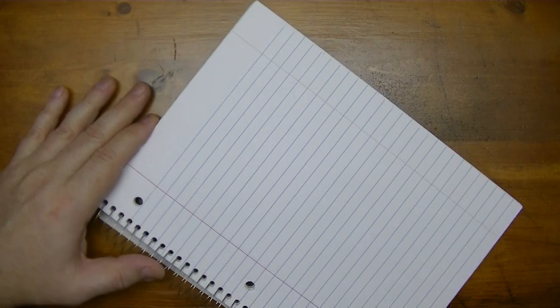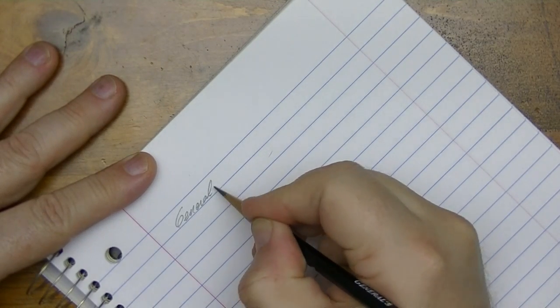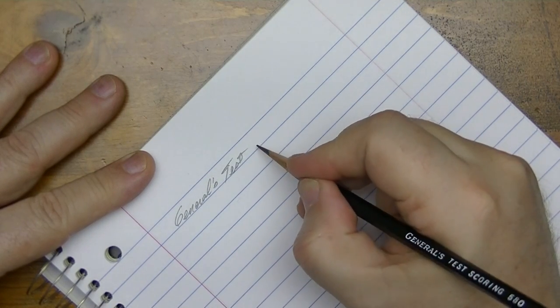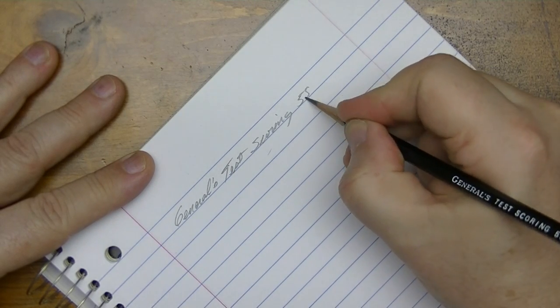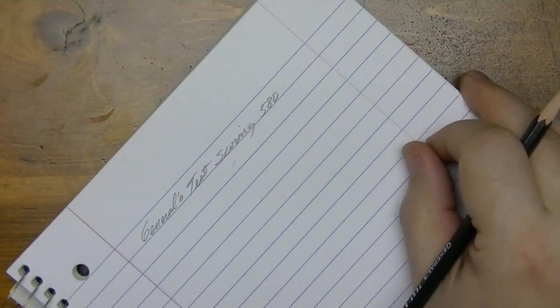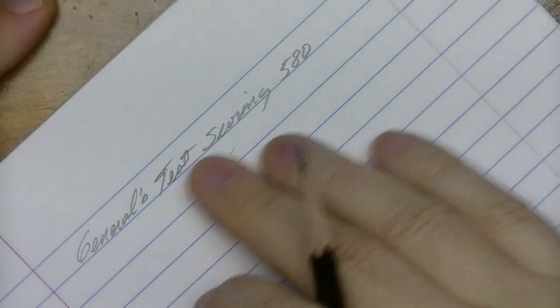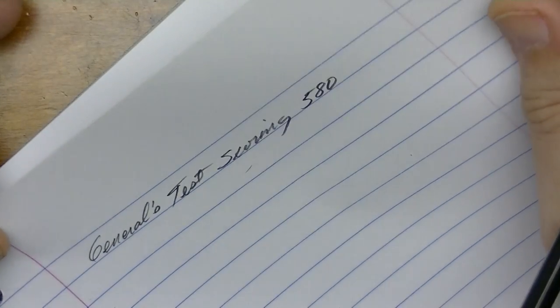Okay. So, first off, let me just give you my little impression here by doing my little handwriting thing here. And so this is the General's Test Scoring 580. Okay. I can tell you that it has a really nice tonal value to it, but it doesn't appear to me to be that dark of a pencil.